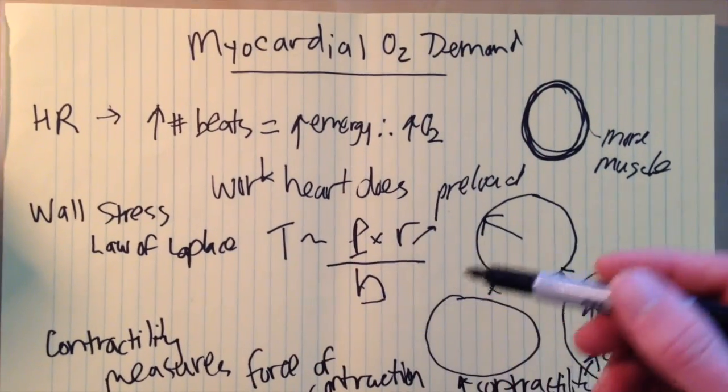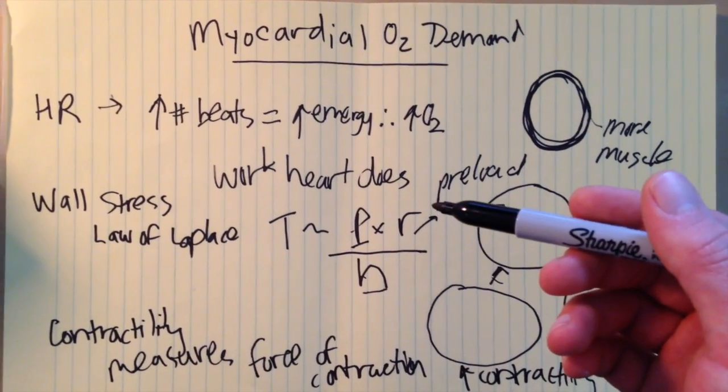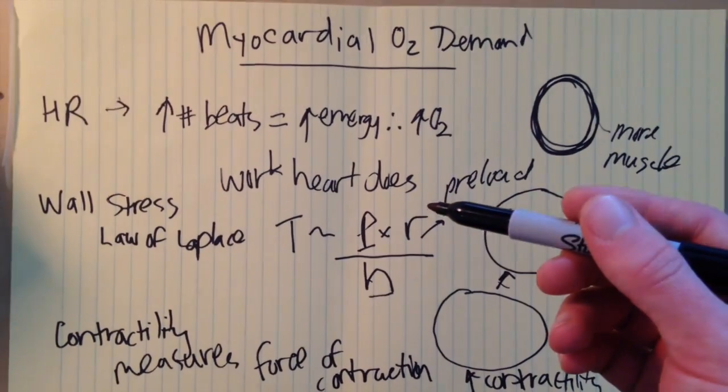So those are the three main factors or set of factors that go into determining myocardial oxygen demand.